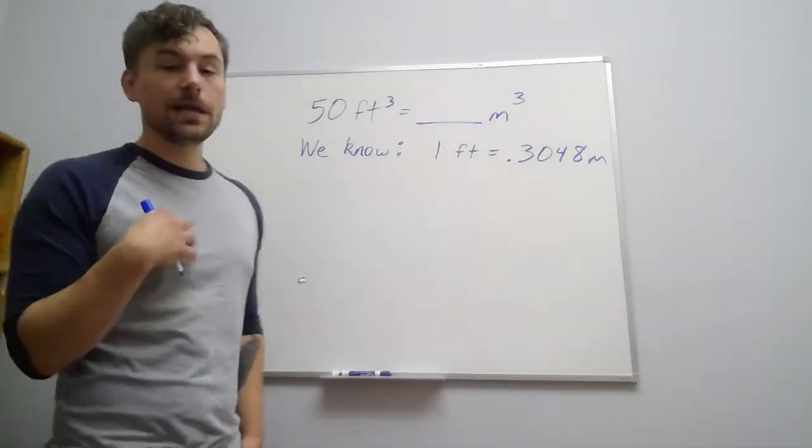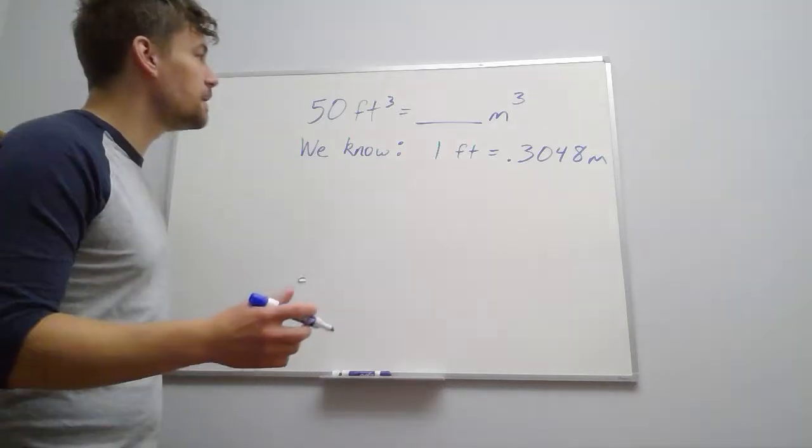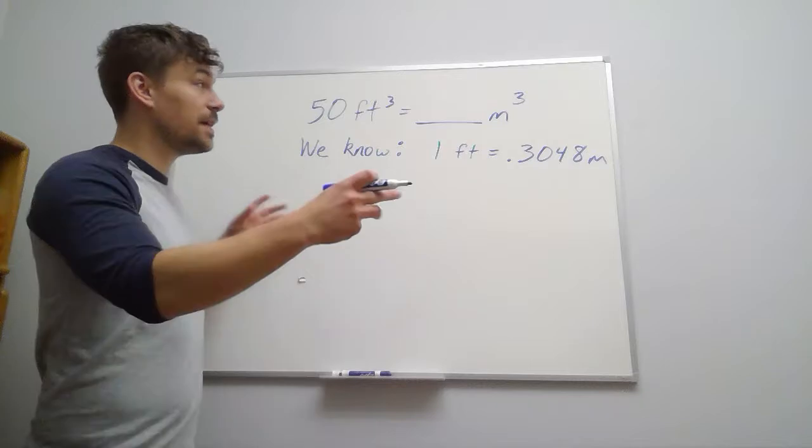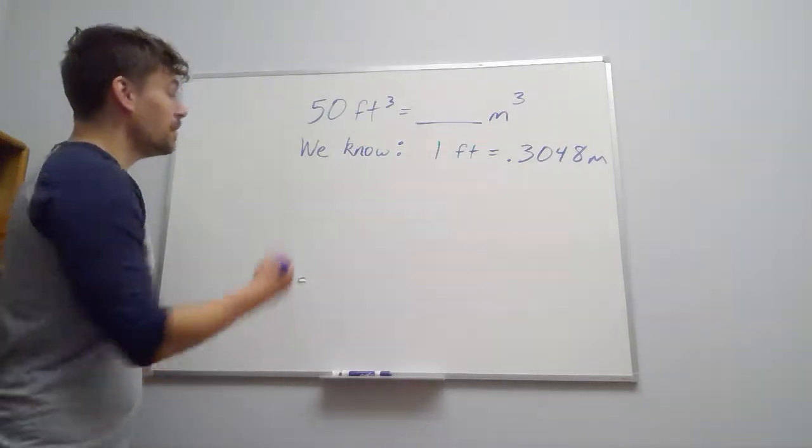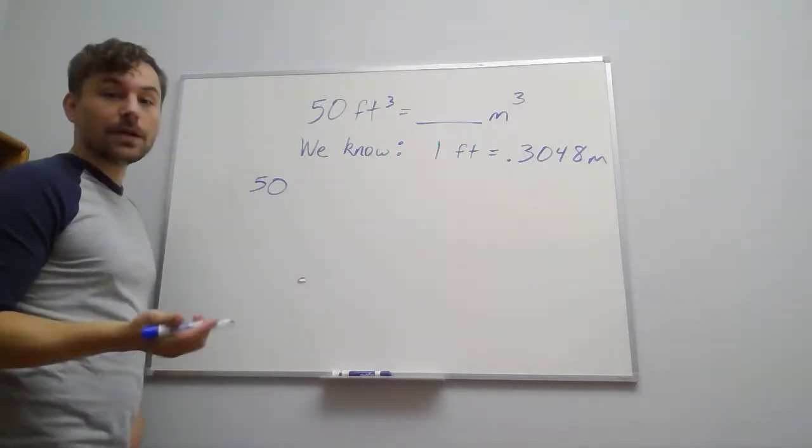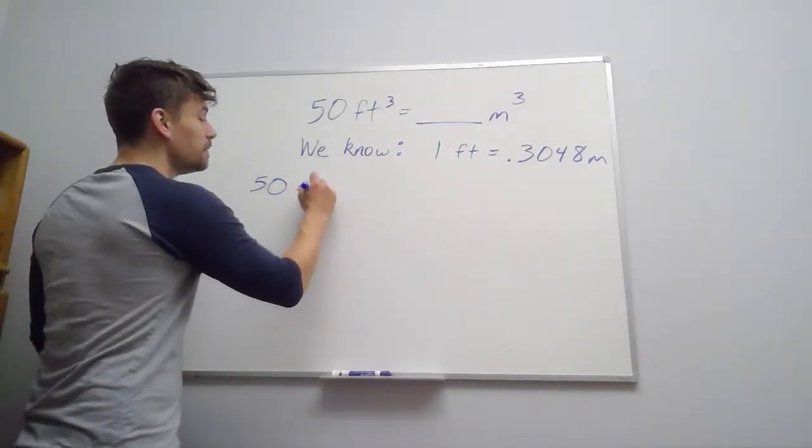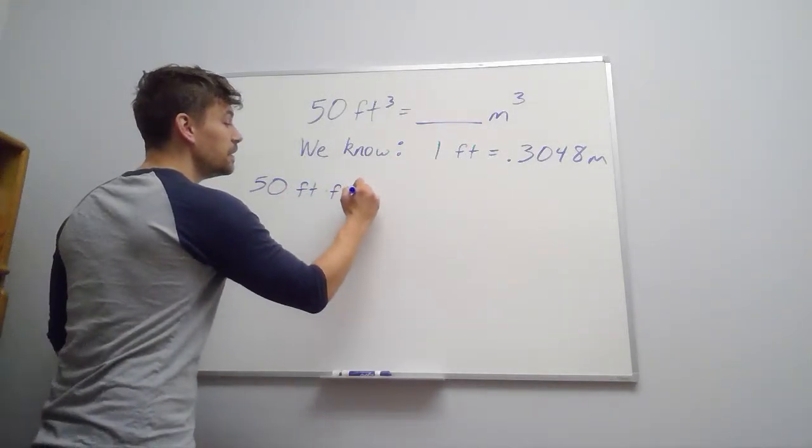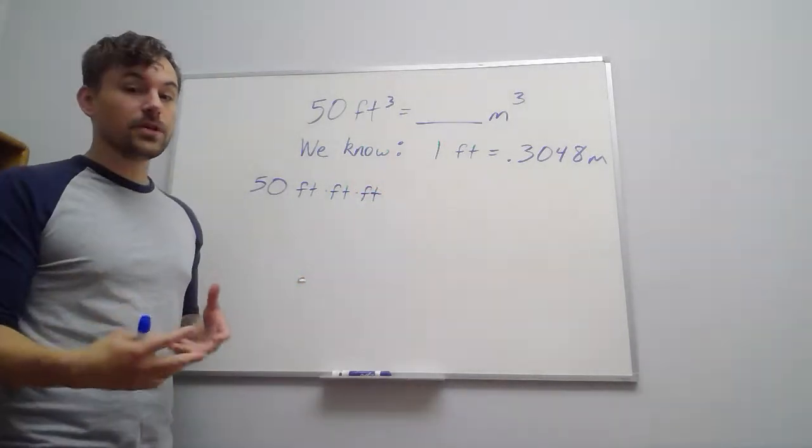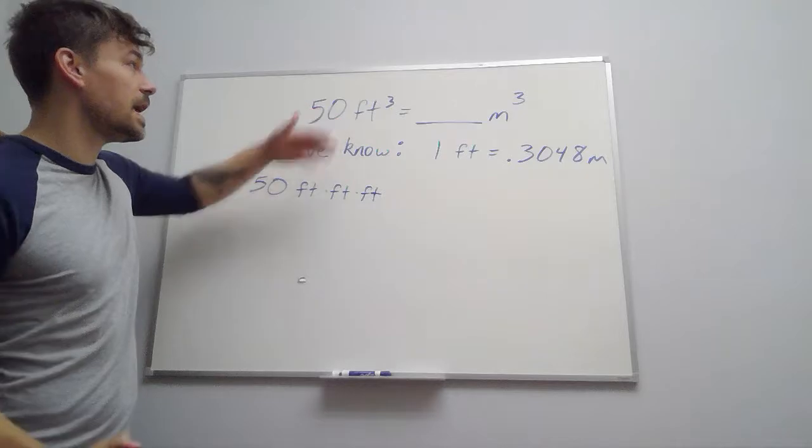So the way I like to handle a lot of these conversion problems is to set it up so that I can see everything written out very clearly. So for cubic feet, I might do something like feet times feet times feet, to really see all three of those dimensions, because that's really what's happening here.